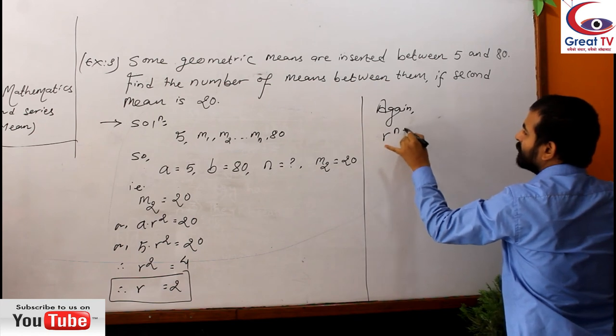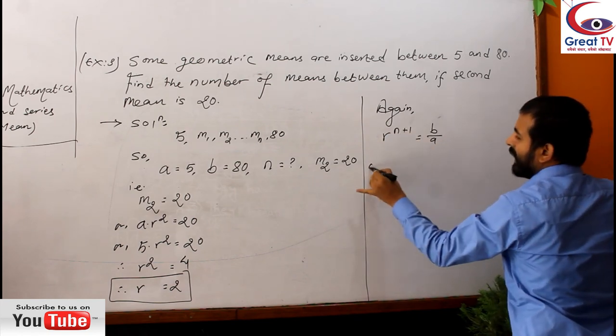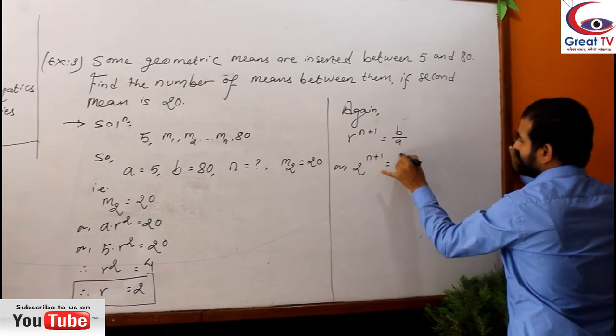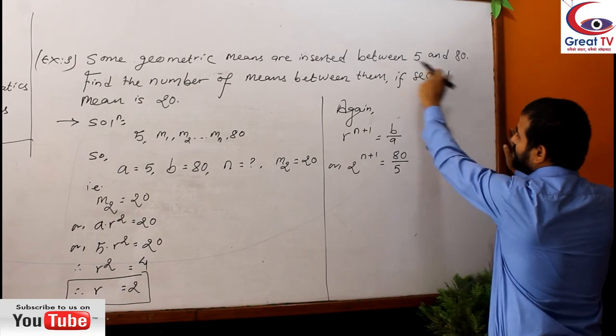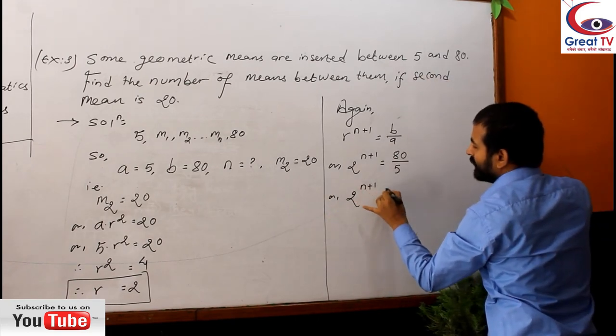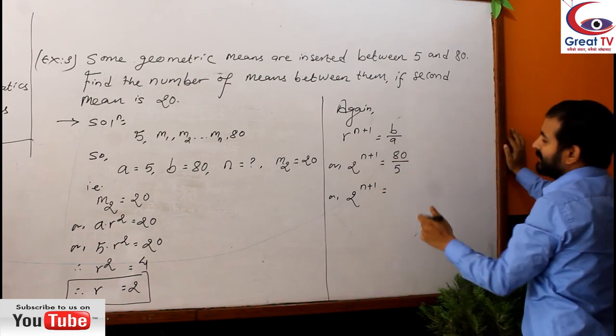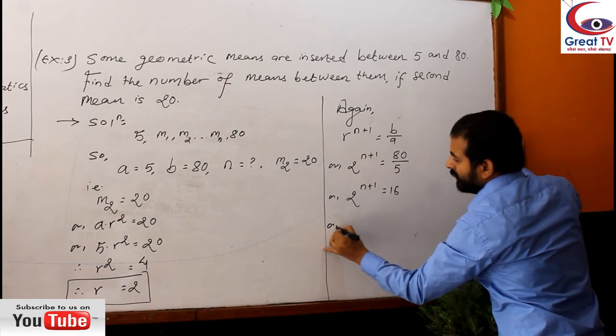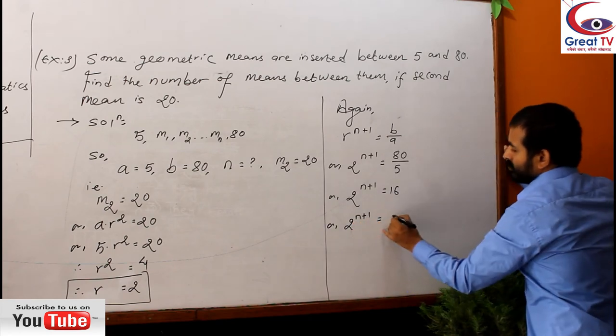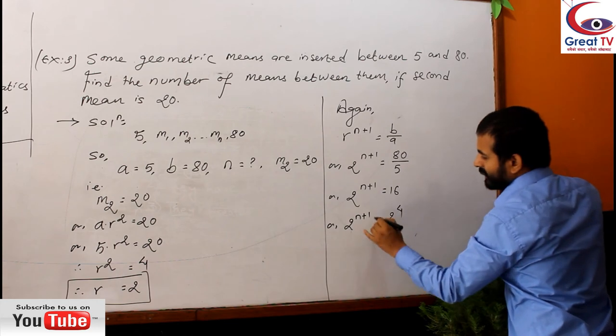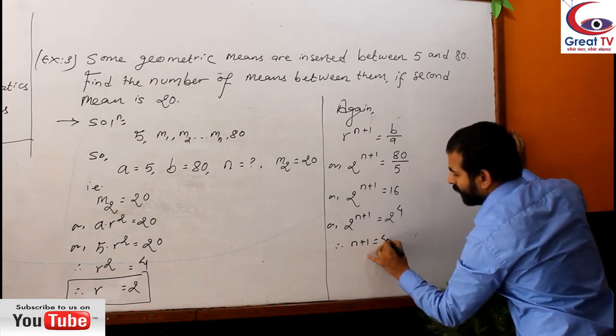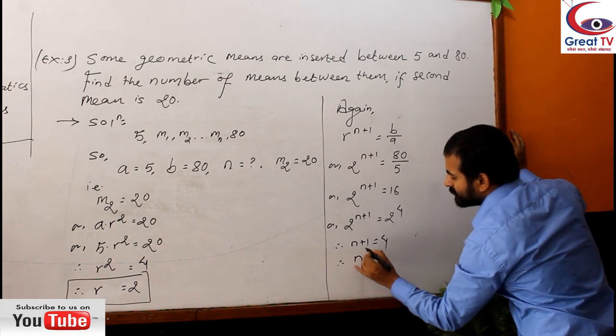That is R^(N+1) = B/A. R means here 2^(N+1), B/A means 80 by 5, because you know the last term is 80 and first term is 5. So 2^(N+1) equals to - if you cancel it you will get it - 16. Or 2^(N+1) equals to 2^4, isn't it? Yes. Now when the base are equal, the power will be equal. N+1 equals to 4. Therefore N equals to 3, my dear students.